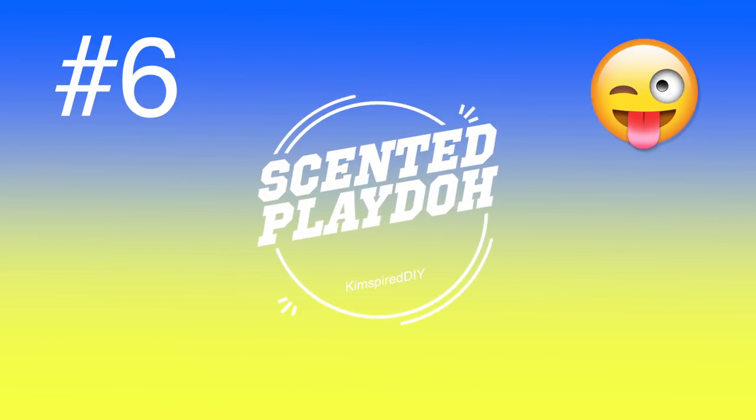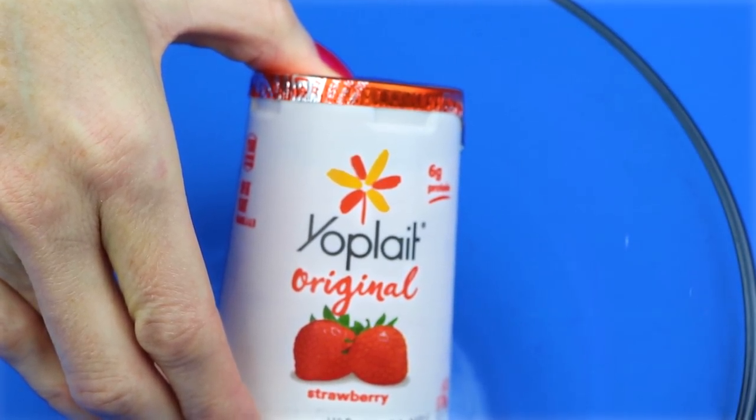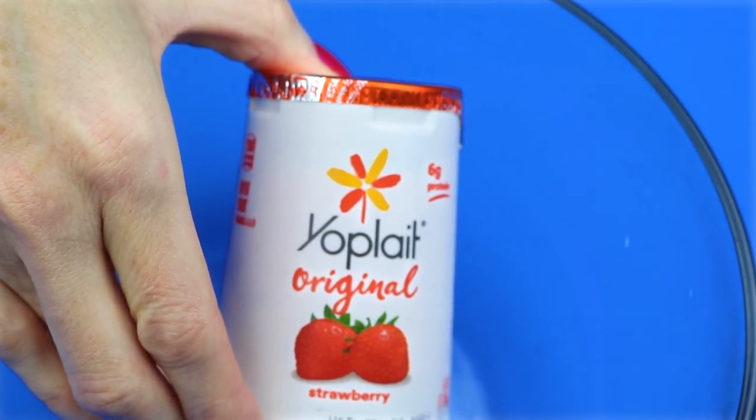The sixth DIY will be scented play-doh. With all the slime videos, I thought to mix it up with some play-doh. This recipe is super simple. It only requires two ingredients. One of them being yogurt. I'm going to use a strawberry yogurt. And I just emptied that into a bowl.